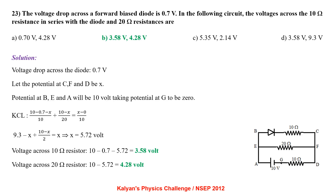The voltage drop across a forward biased diode is 0.7V. In the circuit, the voltage drop across the 10 ohm resistance in series with the diode and 20 ohm resistance R. Let the potential at C be x, potential at B = 10V. Applying KCL: (10−0.7−x)/10 + (10−x)/20 = x/10, giving x = 5.72V. Voltage across 10 ohm resistor = 10 − 0.7 − 5.72 = 3.58V. Voltage across 20 ohm resistor = 10 − 5.72 = 4.28V.